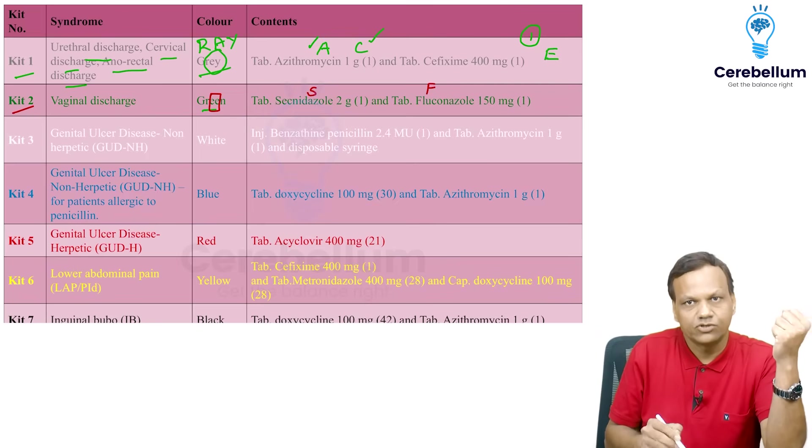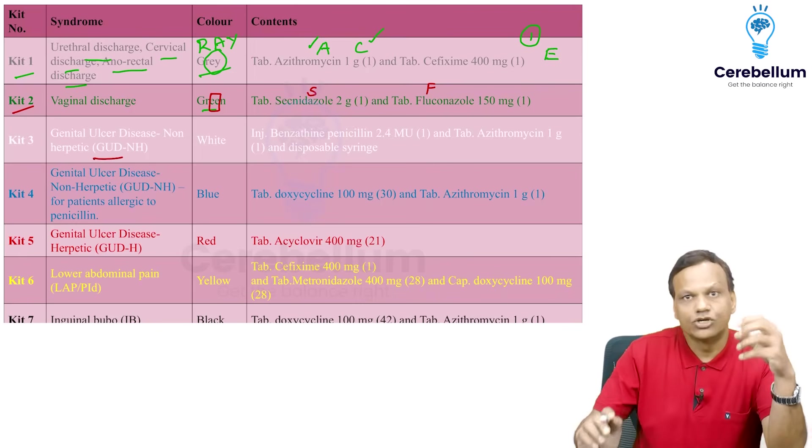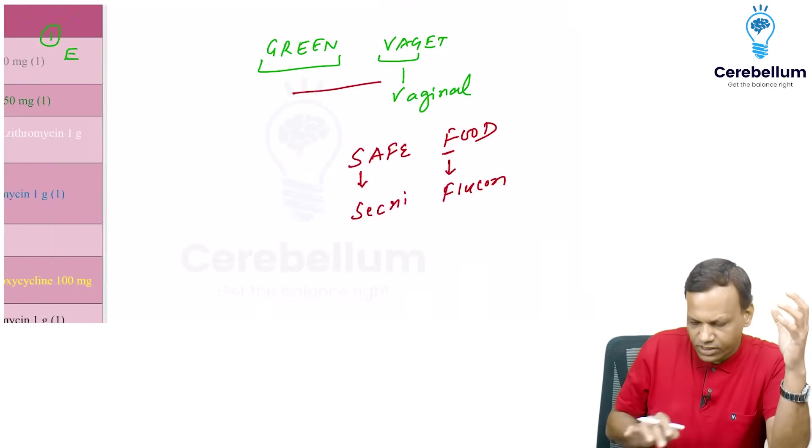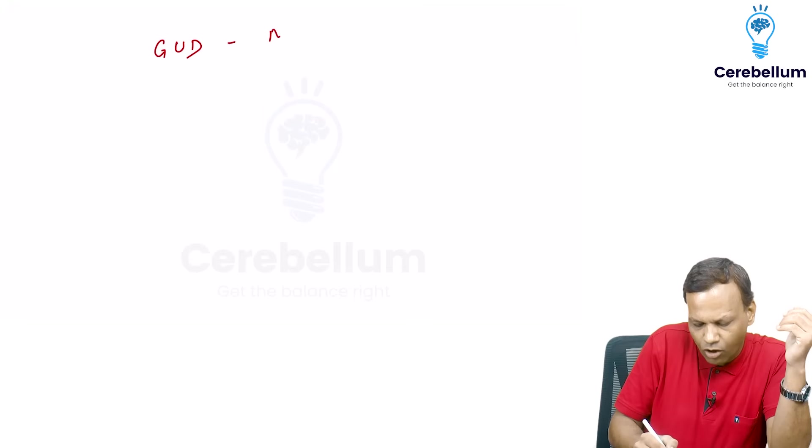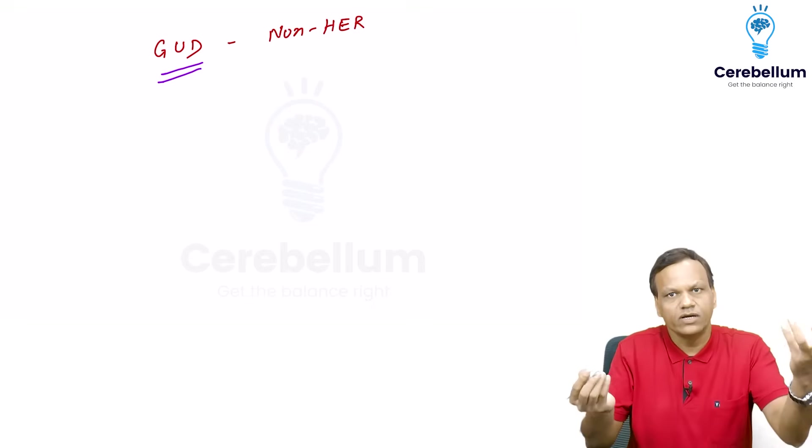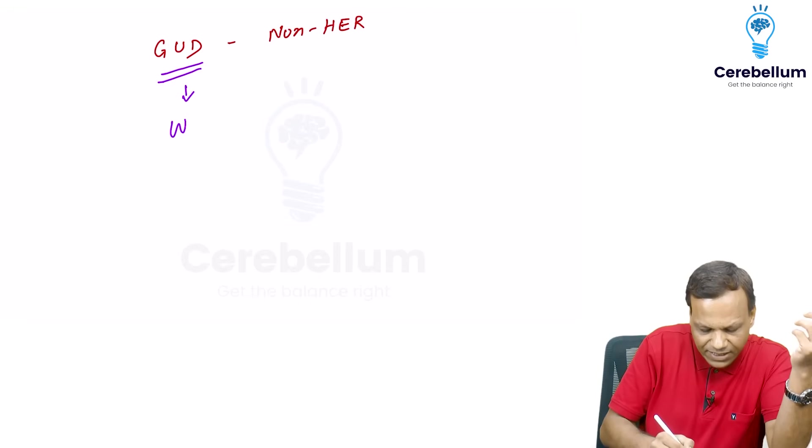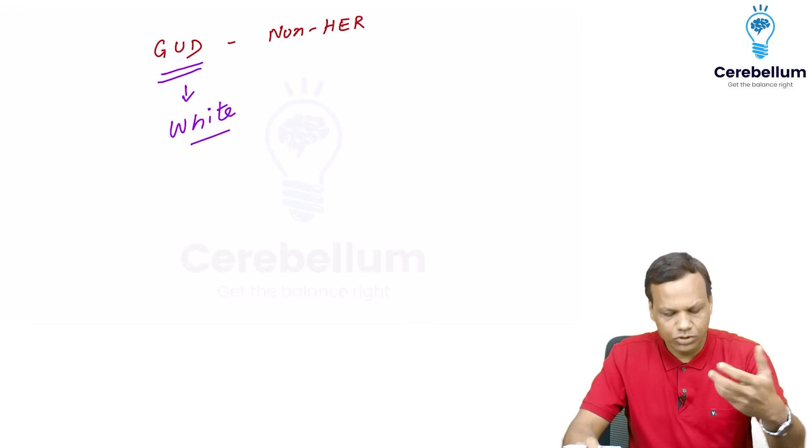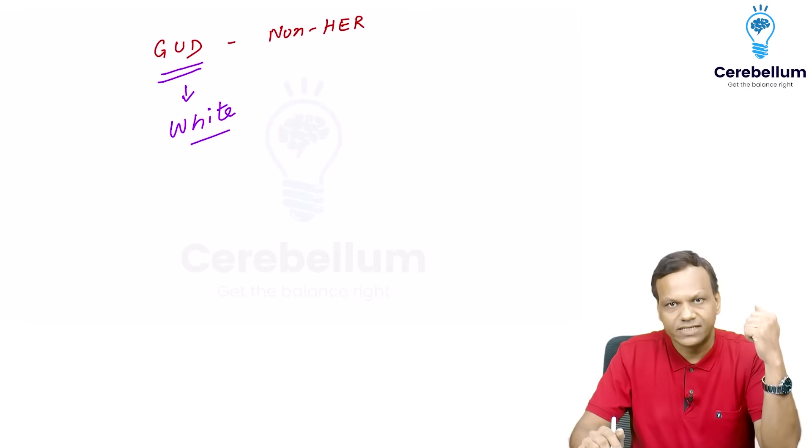Then third is white. So white we know, white is for genital ulcer disease, which is non-herpetic. So how we will remember, it is a genital ulcer disease which is non-herpetic. So what we will say, it is good. What is good? We know, we see the ad, daag achche hai. So white clothes get stains. Stains are good. So white, good is white. And otherwise also you can see white is a symbol of peace. Peace is good. So white is good for genital ulcer disease.